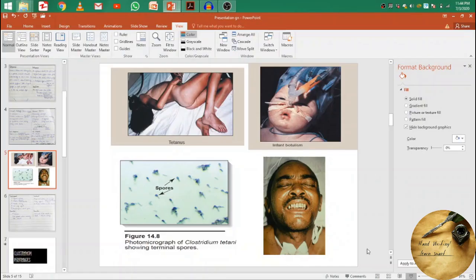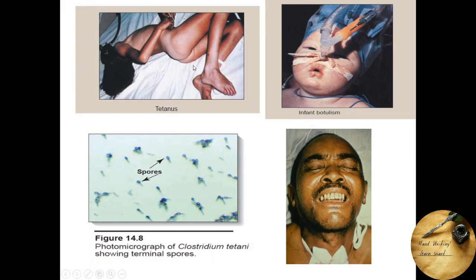You can see the opisthotonus, i.e. back arching, a picture of risus sardonicus of Clostridium tetanus. You can see the picture of infant botulism which requires respiratory support and the picture of Clostridium tetani showing terminal spores on culture which look like tennis racket.